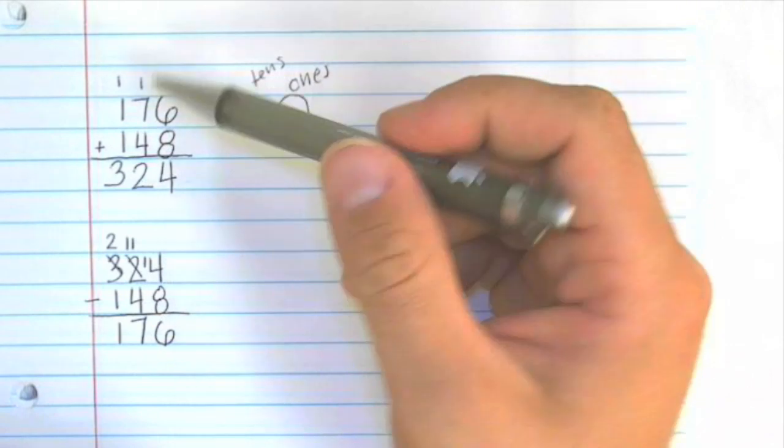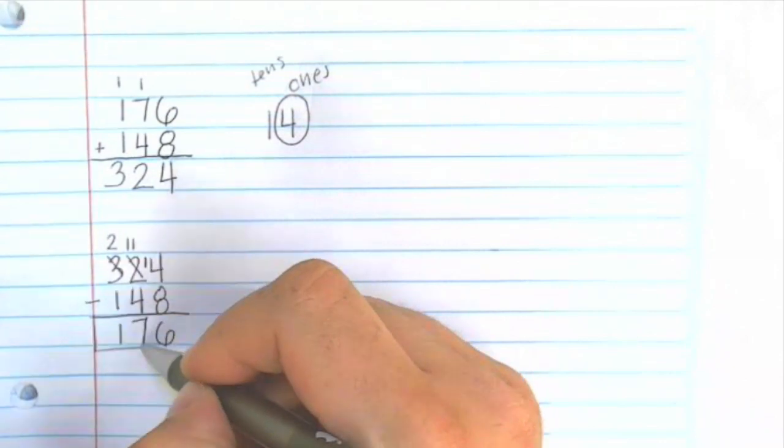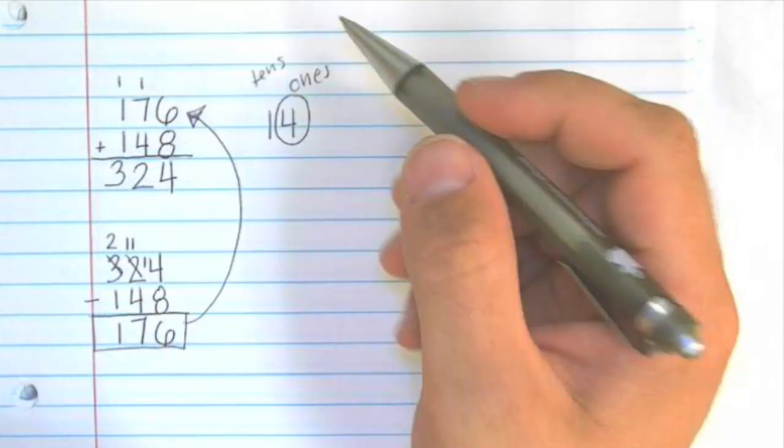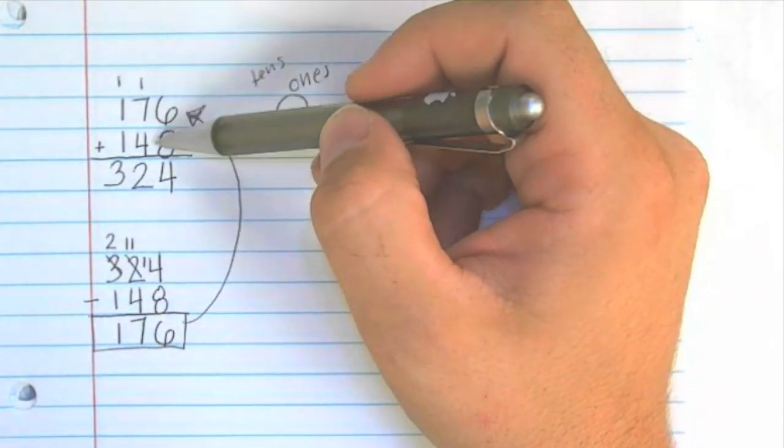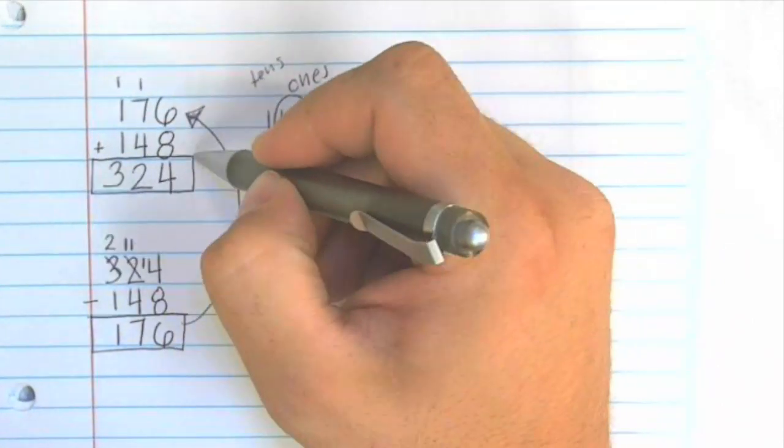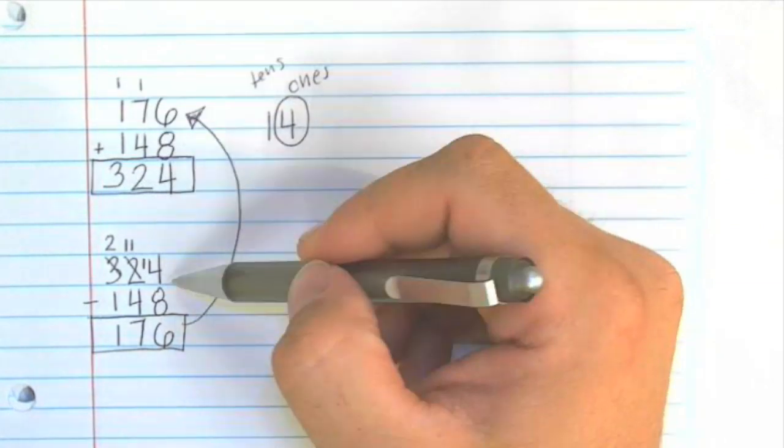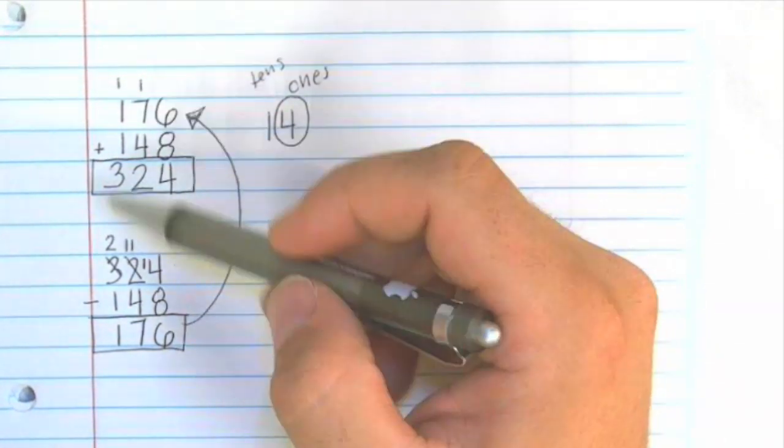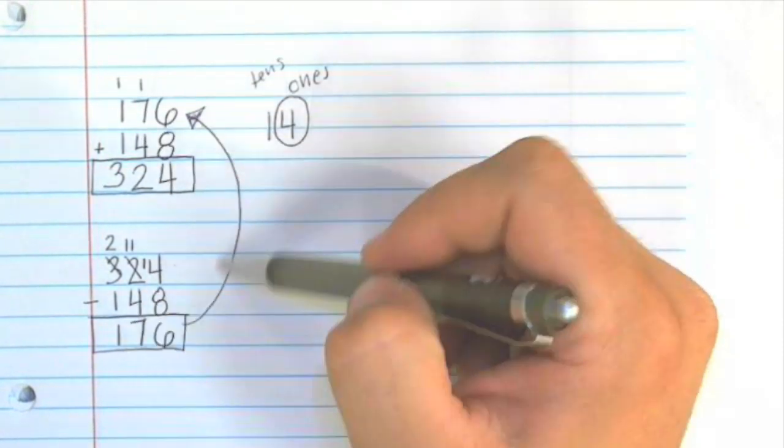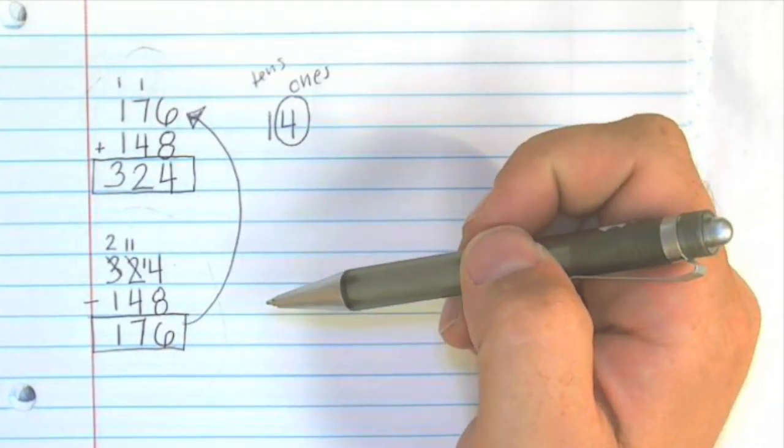So we subtracted 148 from 324 and we got 176. And that is the same as this number up here. So our addition problem was 176 plus 148. And the sum of those two numbers was 324. We checked our problem using subtraction using the inverse operation. So we took 324, which was our answer. We subtracted 148, which was the number right above here. And we got 176. So we have the same numbers here as here. So we know that we have the correct answer.